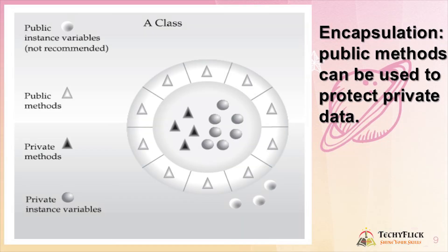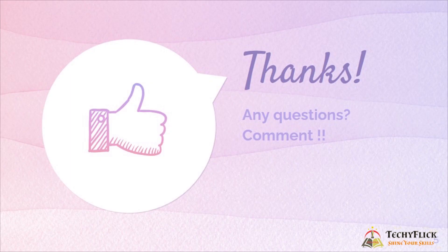This diagram represents the encapsulation of public and private data. Go through the diagram and find which are all public methods, public variables, and private variables. If you have any doubts, leave your doubts in the comment section. Thank you.